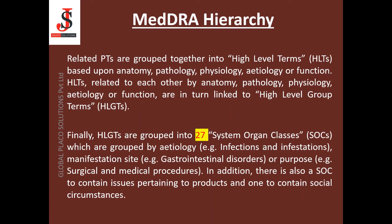The related PTs are grouped together into High Level Terms (HLTs), based upon anatomy, pathology, physiology, etiology, or function. HLTs related to each other by anatomy, pathology, physiology, etiology, or function are in turn linked to High Level Group Terms. Finally, HLGTs are grouped into 27 System Organ Classes (SOC), which are grouped by etiology — e.g., infections and infestations — manifestation site — e.g., gastrointestinal disorders — or purpose — e.g., surgical and medical procedures. In addition, there is also a SOC to contain issues pertaining to products and one to contain social circumstances.